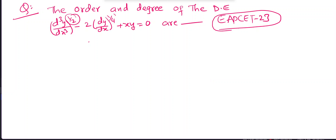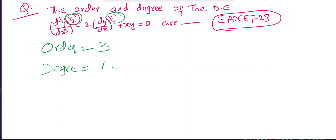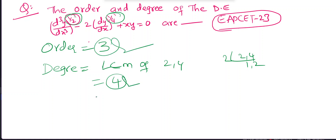The next question: find the order and degree of (d³y/dx³)^(1/2) - 2(dy/dx)^(1/4) + xy = 0. The highest derivative is d³y/dx³, so order = 3. To find degree, take LCM of denominators 2 and 4, which is 4. Raise both sides to the power 4. Therefore degree = 4.